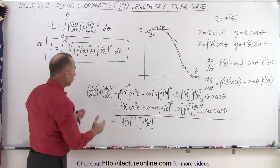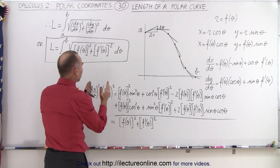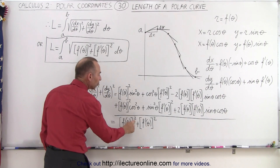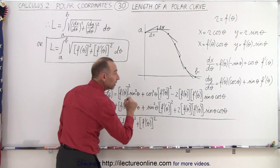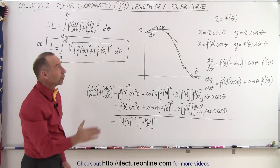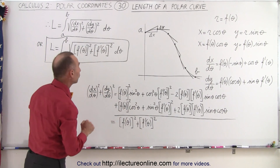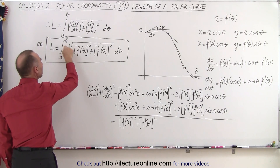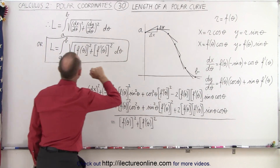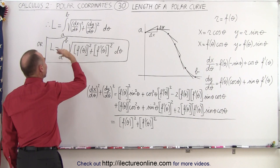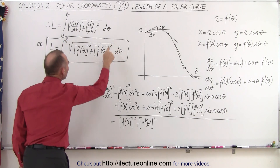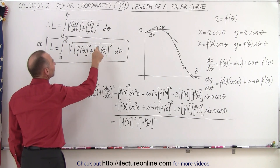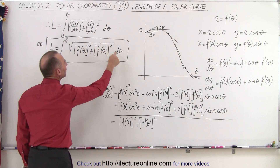In other words, (dx/dθ)² + (dy/dθ)² equals f(θ)² + f′(θ)². This means that to find the length of a polar curve, it equals the integral from a to b of the square root of f(θ)² + f′(θ)² dθ.